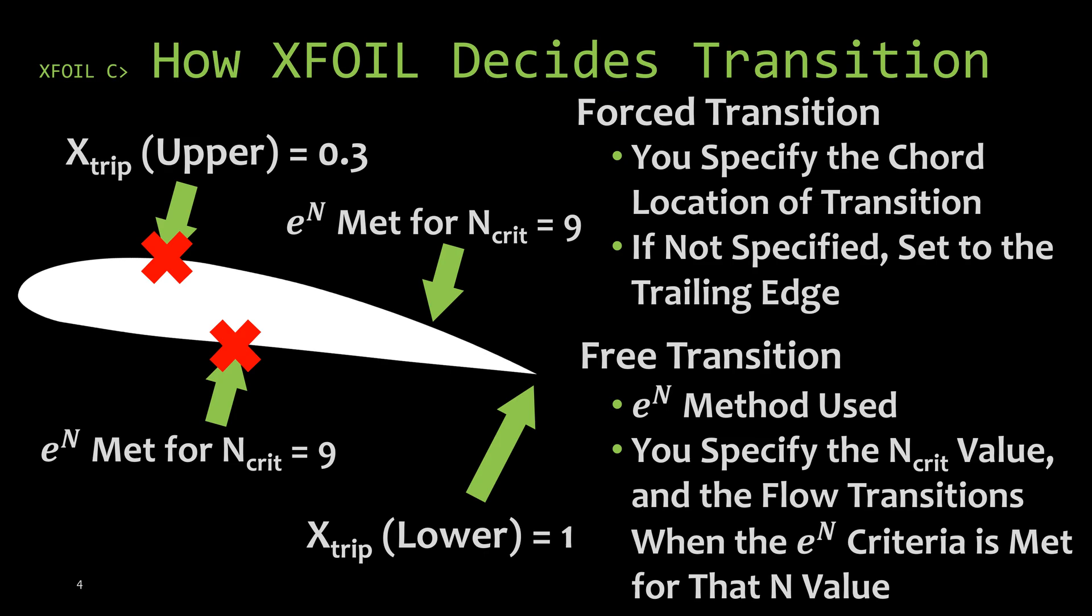I have an example here on the left to help clarify. On the upper surface we specified that we wanted to trip the flow at a chord location of 0.3. That's 30% of the chord. On the bottom we didn't specify where we wanted to trip the flow so it's automatically set to the trailing edge or a chord location of 1.